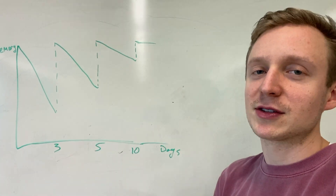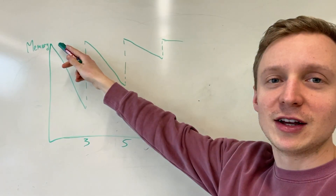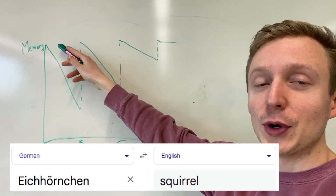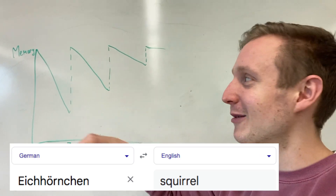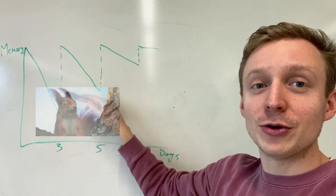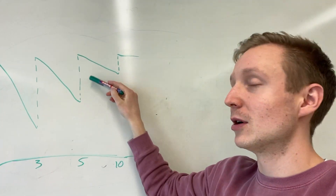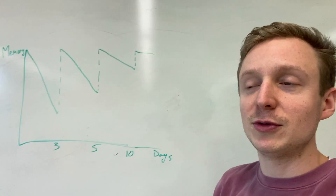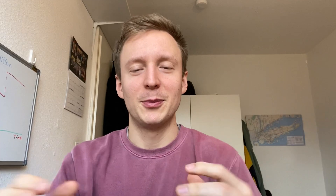This principle makes sense. On day one, maybe I learned that squirrel in German is ein Eichhörnchen. But you forget it after three days, so you review it. Now you forget it a little bit slower, and then eventually you've memorized it if you keep reviewing it over and over. That's the basic idea.